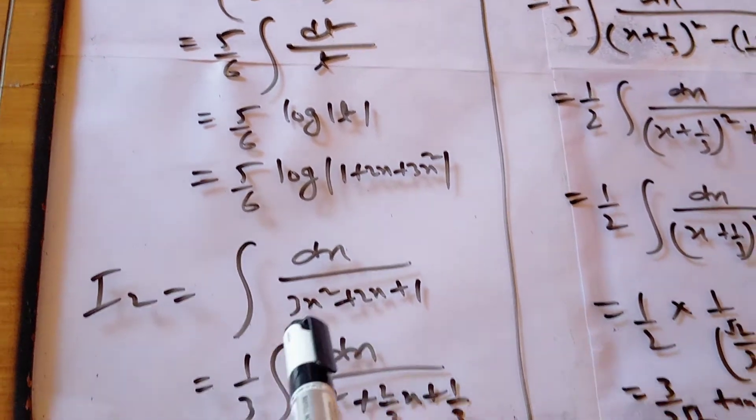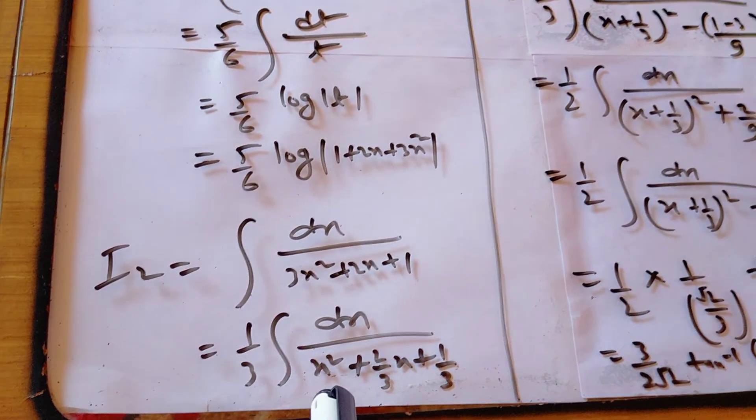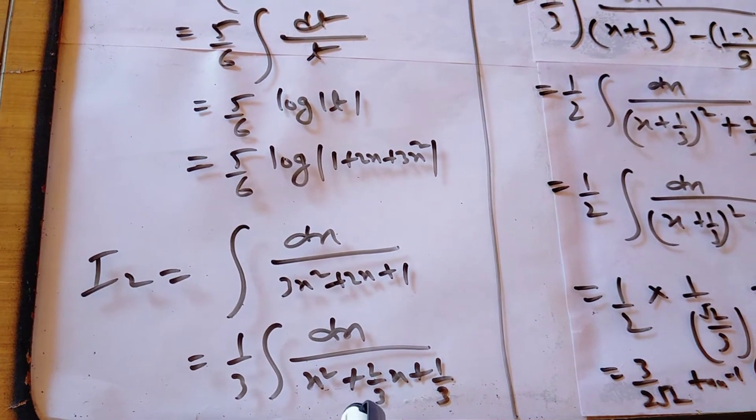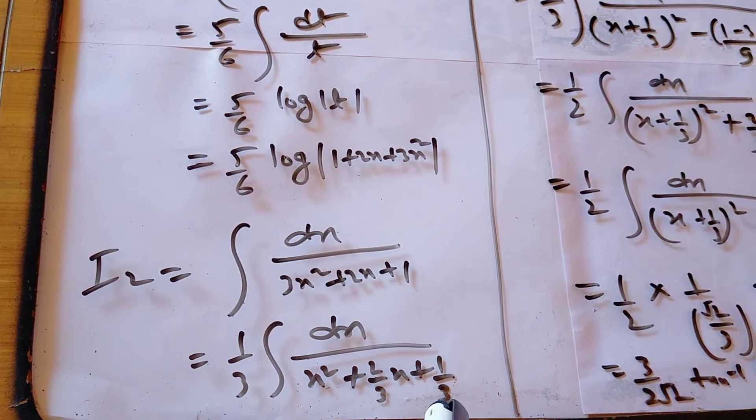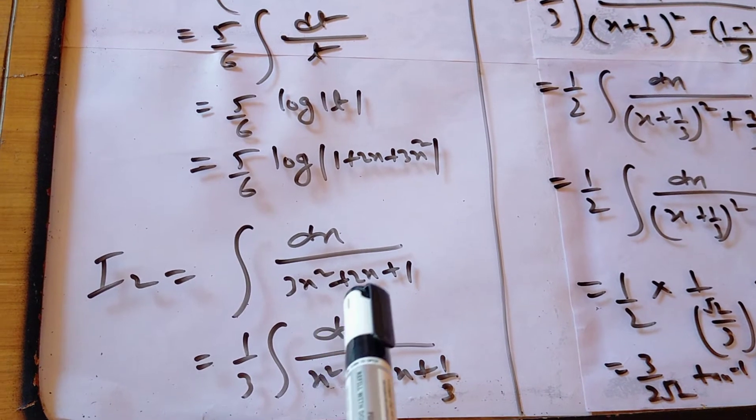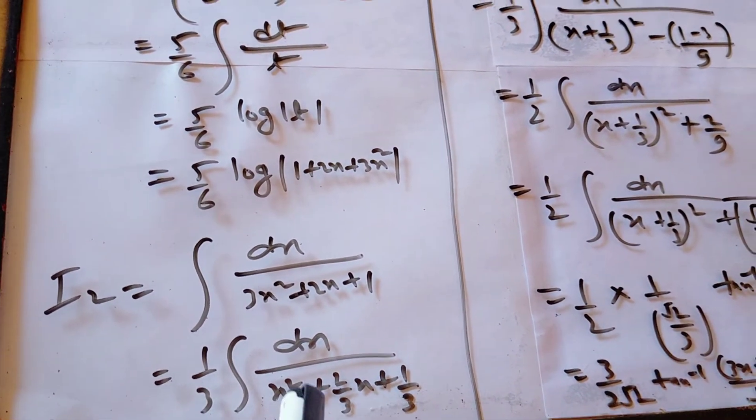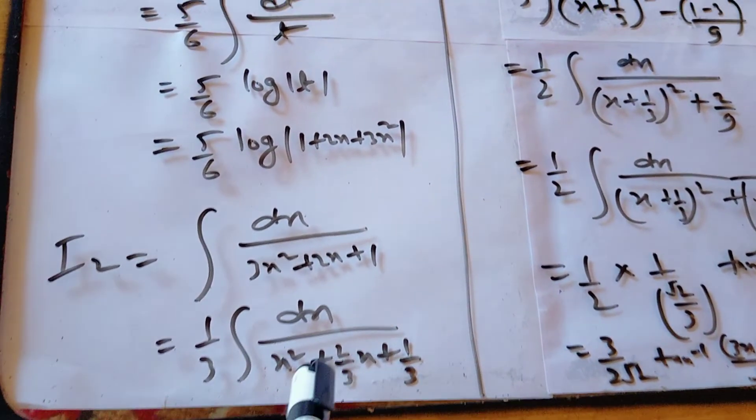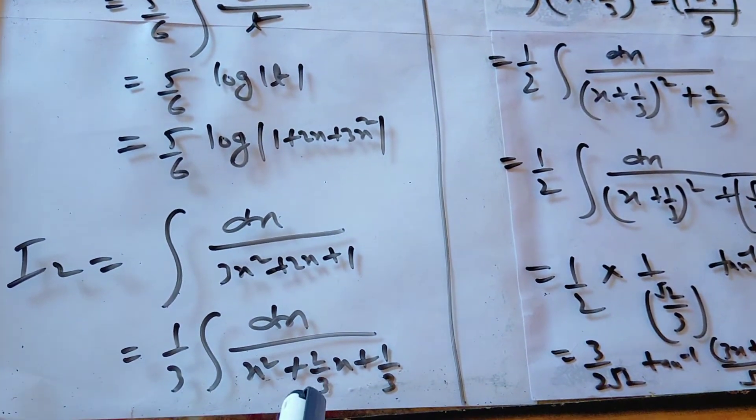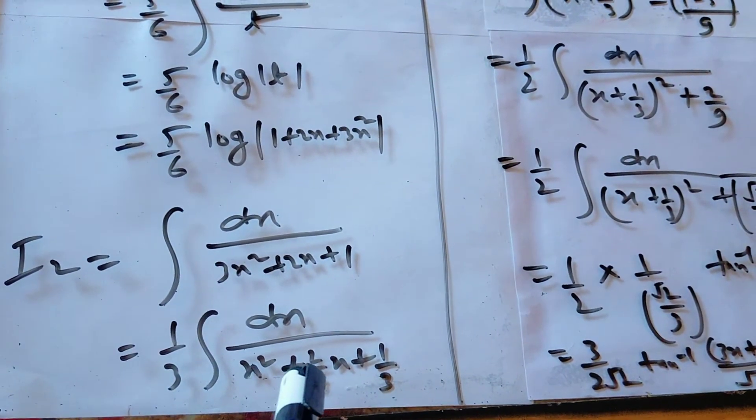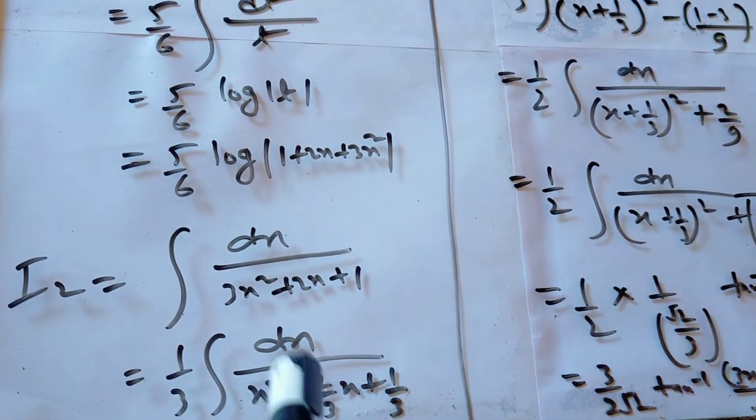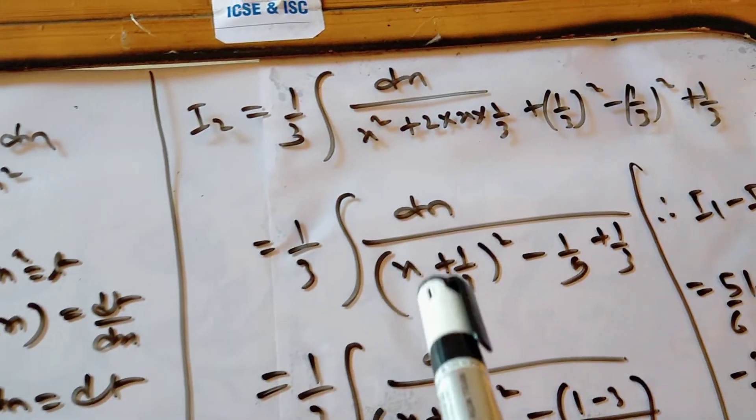It is called perfect square. So we have taken 3 to make perfect square. So it means that x square plus 2 by 3x plus 1 by 3, because 3 is not available in second term and third term. So we have to make 3 common. So what is the value of I2?